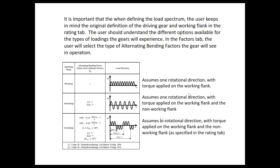It's important that when you define the load spectrum, the user keeps in mind the original definition: clockwise, right flank, gear one is the driving gear. In the alternating bending factor menu on the factor tab, you define different load profiles. The pulsating mode means one rotational direction with torque applied on the working flank — in this case clockwise, applied to the right flank. The alternating operating mode means one rotational direction with torque applied on both the working flank and the non-working flank. An example is an engine balance gear, where compression and combustion events drive torque on both flanks — a positive torque and a negative torque.